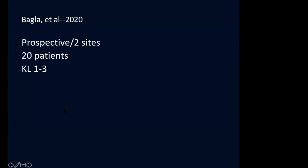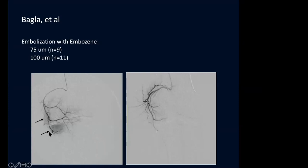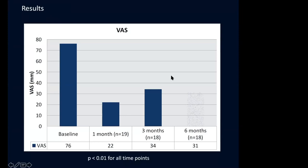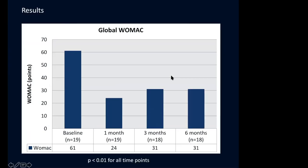No major complications and one access site hematoma in that study. In our clinical study, published in JVIR, we enrolled 20 patients at two sites, also Kellgren grades 1, 2, and 3. Nine patients underwent embolization with 75-micron Embozine and 11 with 100-micron Embozine. In terms of clinical results, the VAS improvement was very substantial—about 60% to 70% improvement in pain—durable at least to six months, which was the duration of our clinical study. Physical function and quality of life also improved out to six months.